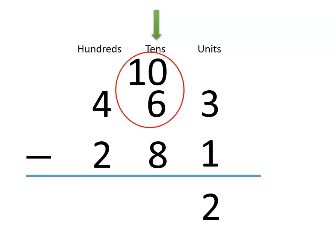If you look at the 10 tens and the 6 tens, you can regroup them to be 16 tens. 16 tens minus 8 tens leaves us with 8 tens.